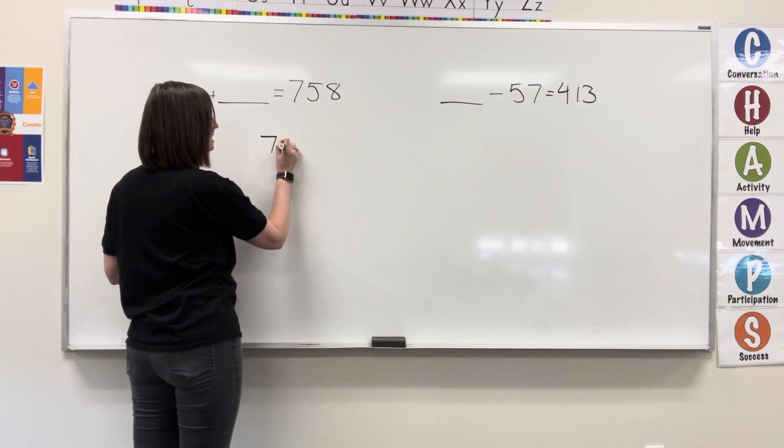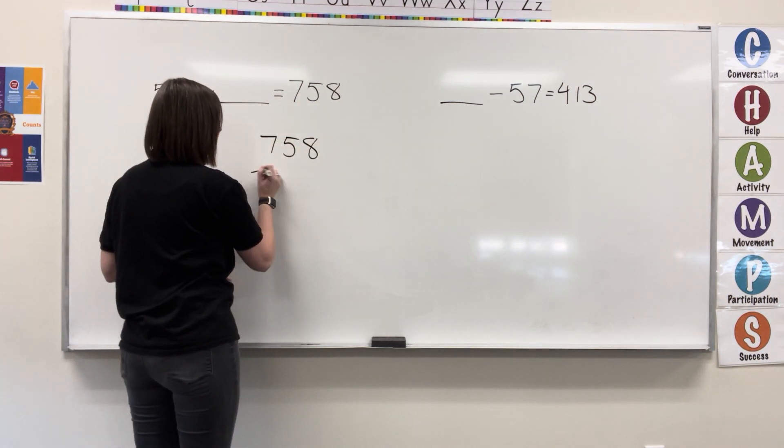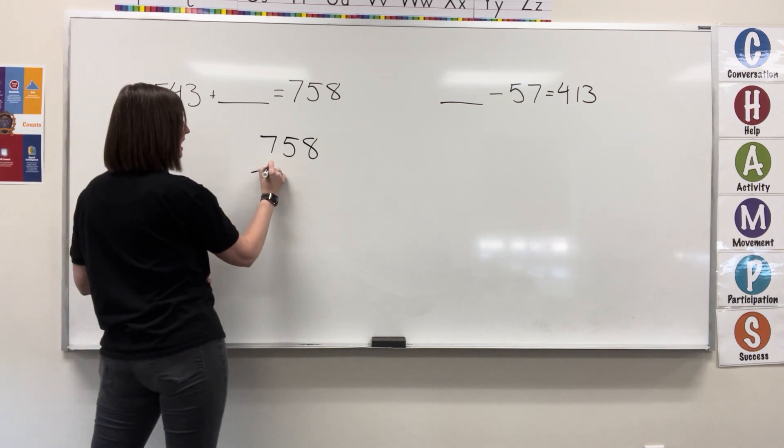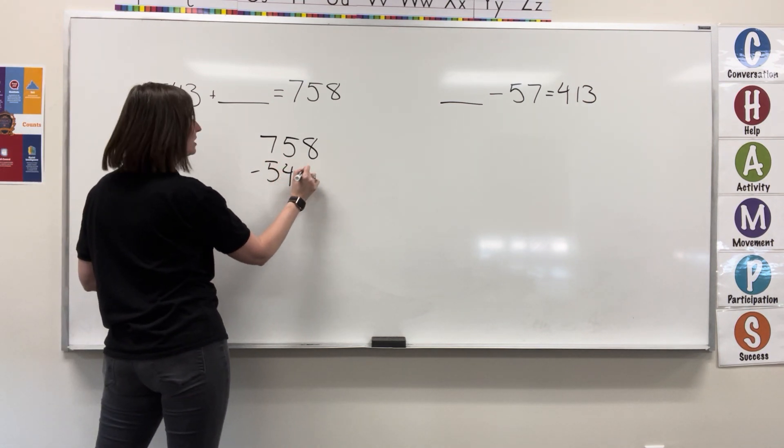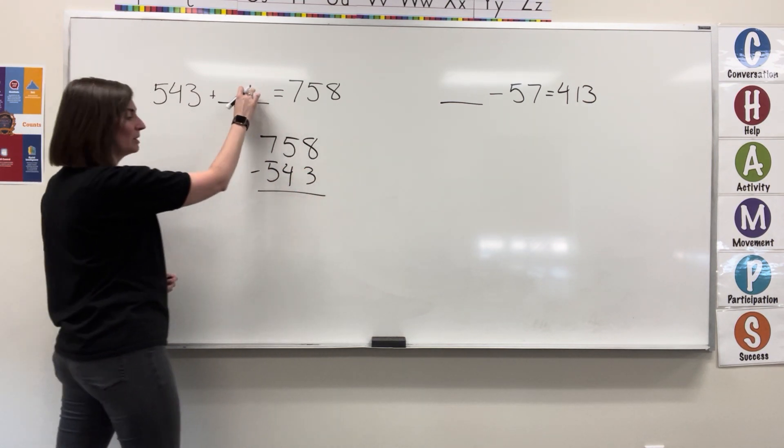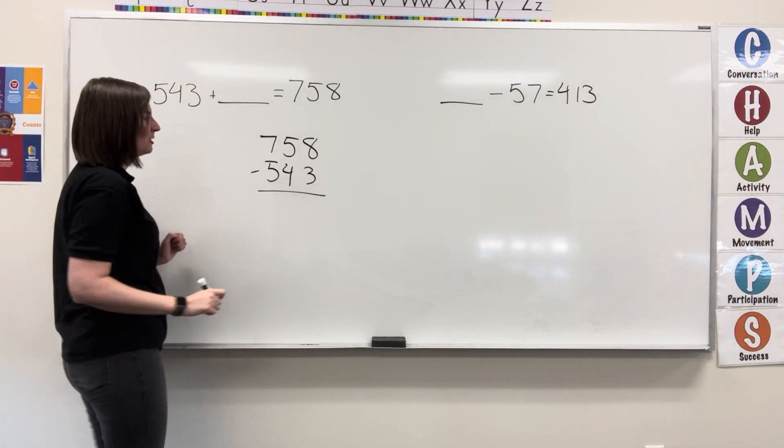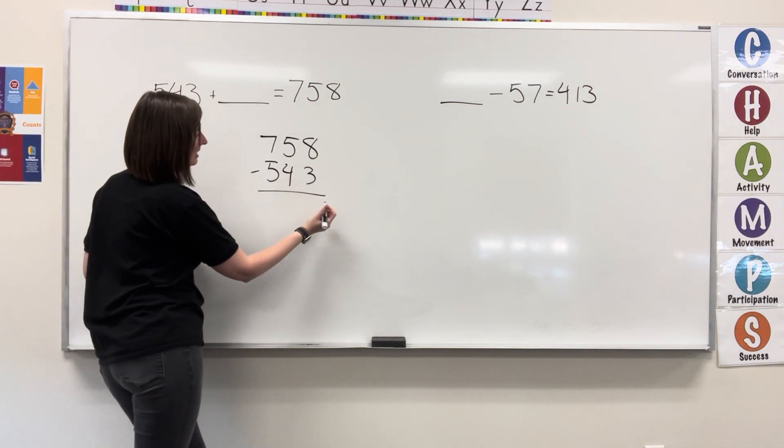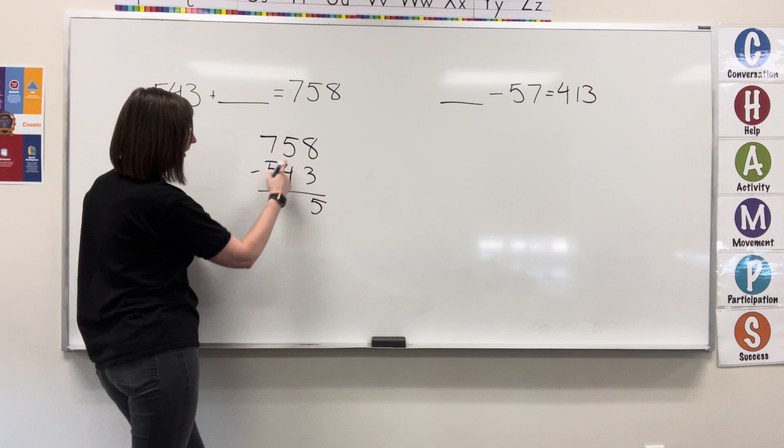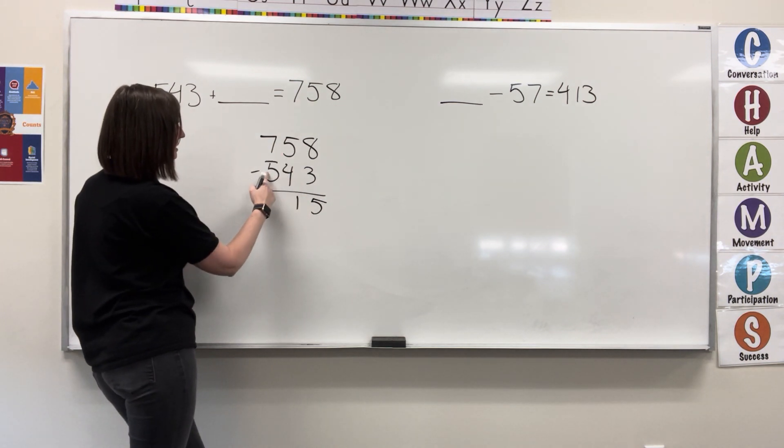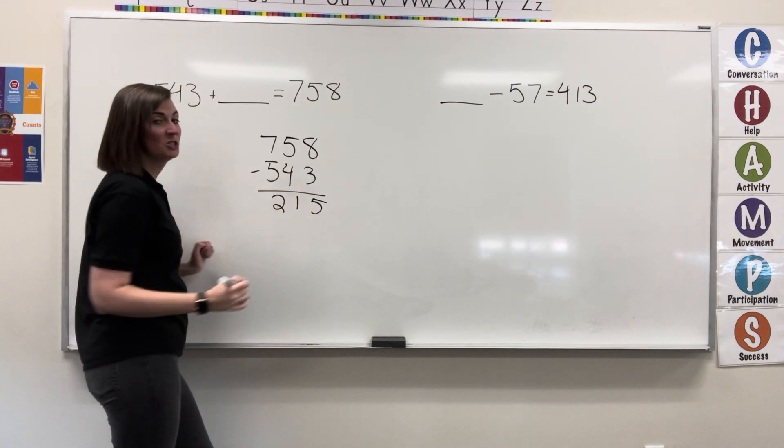I'm going to take 758, our total, and subtract what we already have, 543, to find what's missing. Starting in the ones, I have 8 minus 3 equals 5, 5 minus 4 equals 1, 7 minus 5 equals 2.